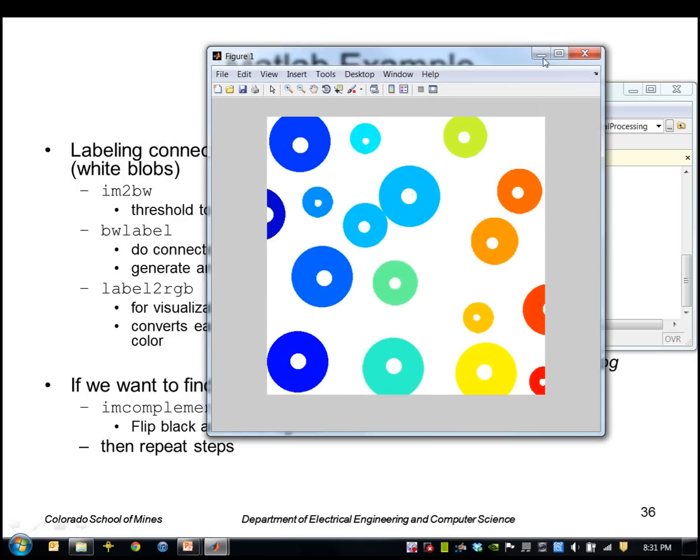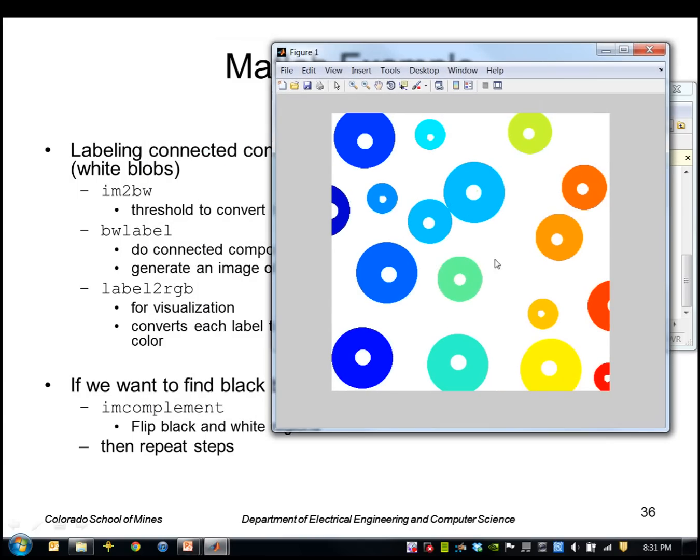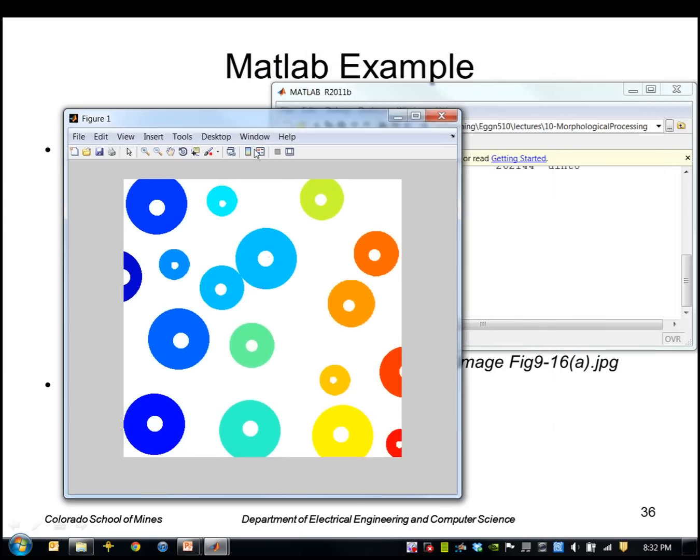So now it's much easier to see the different regions. It's just arbitrarily assigned different colors to all of these. One thing you do notice here is that these two regions wound up with the same label because they actually touch. So these two regions are actually part of the same region.